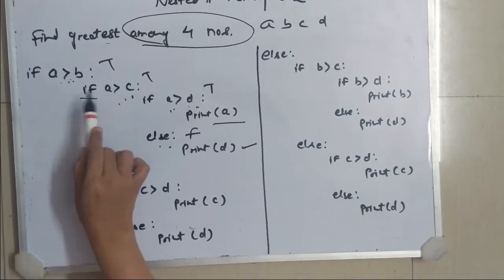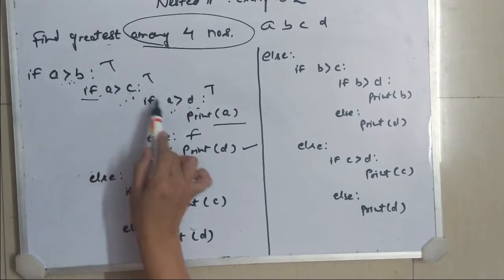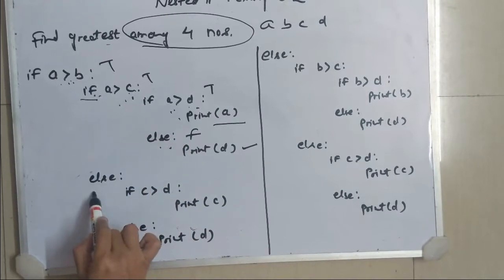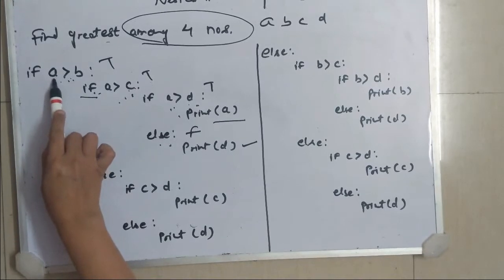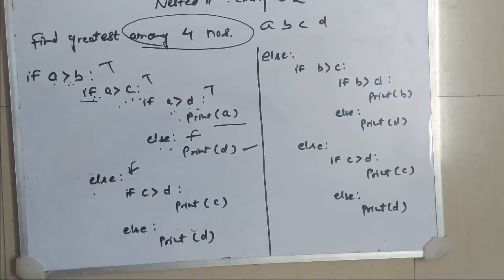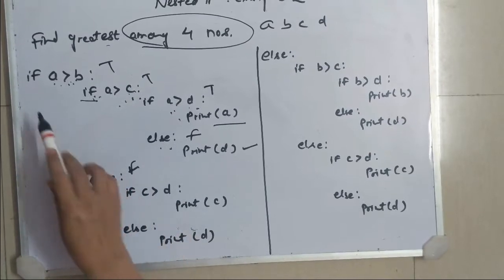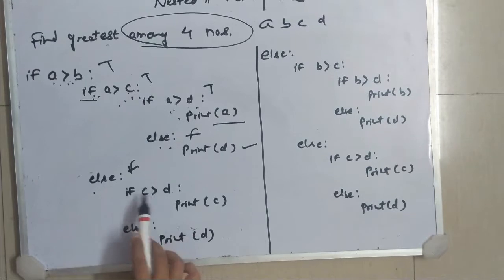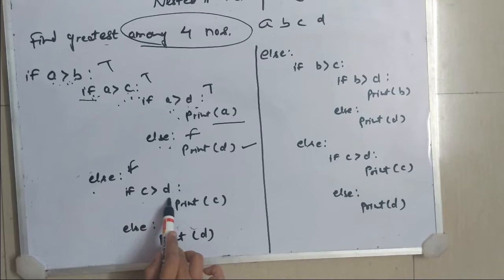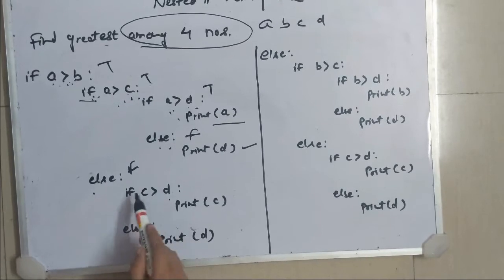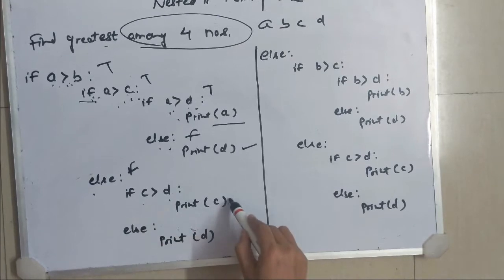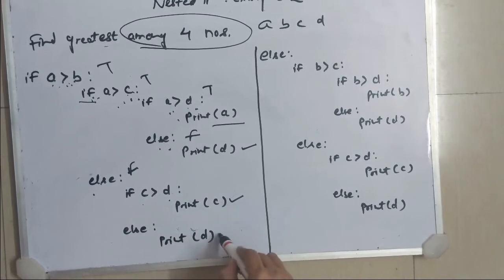Now we will come to this if. If this if was true, then we proceed in this way. But if this if is false — that means A is greater than B but A is not greater than C — then we have compared A with B and A with C, but we don't know anything about C and D. So we will compare C with D. If C is greater than D, then I will print C; otherwise I will print D.